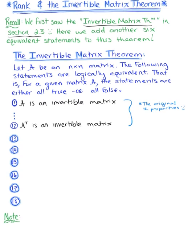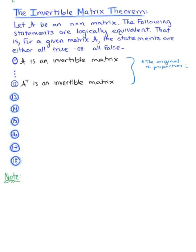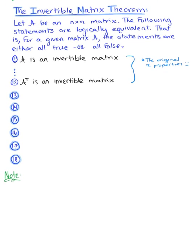And what we're going to do now is take our knowledge of rank, and the column space of A, and the null space of A, and the dimension, and the row space, and add six new properties to this theorem.